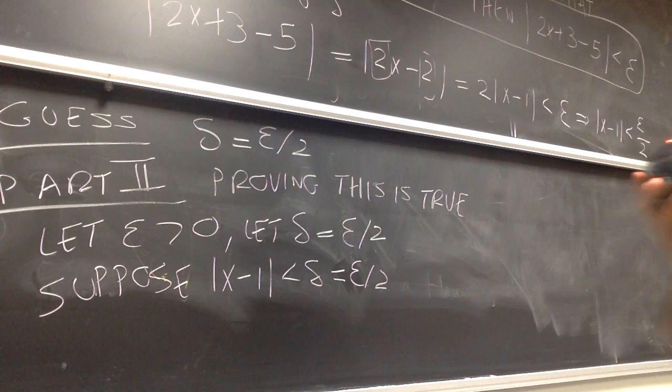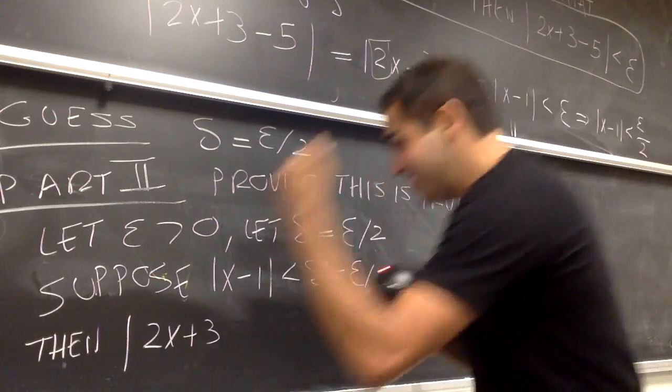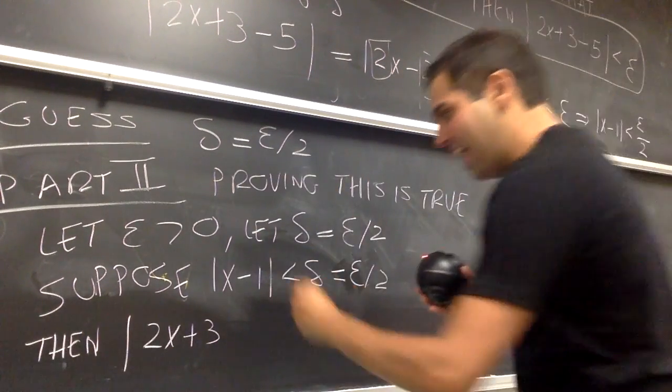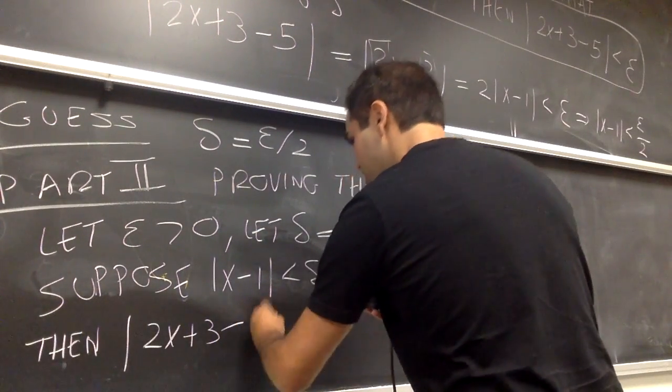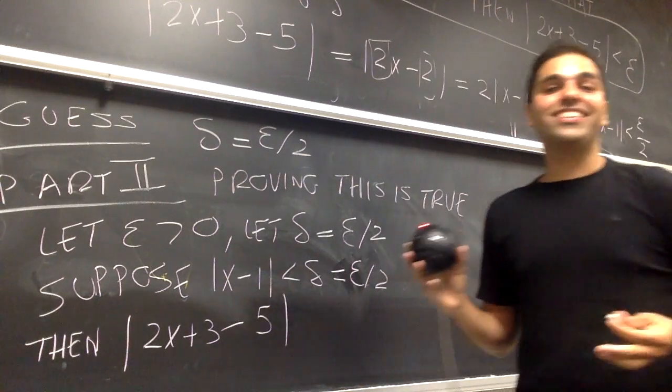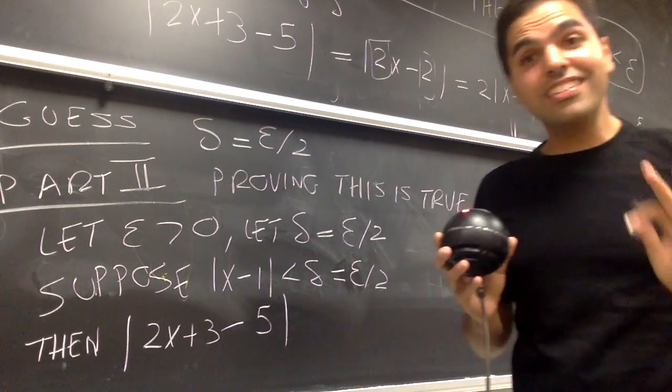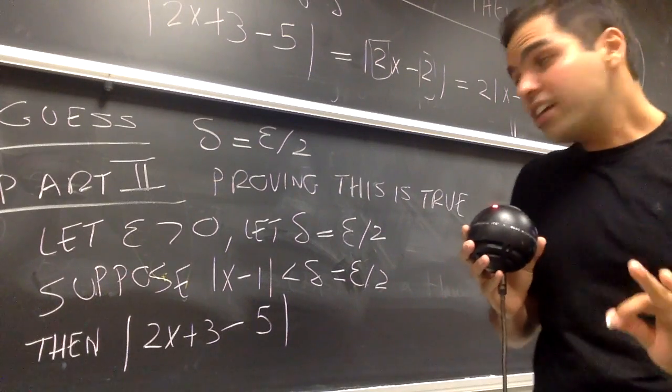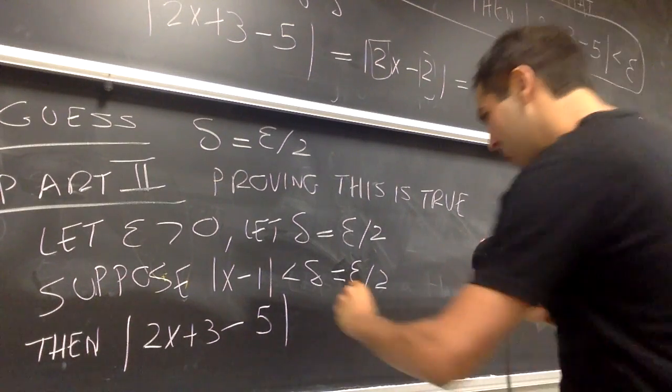Then, let's look at what happens to our original expression. Okay, so then, we want to show that this expression, 2x plus 3 minus 5, we ultimately want to show that this is less than Epsilon. So, once this is less than Epsilon, we are done. And you can go home very happy.